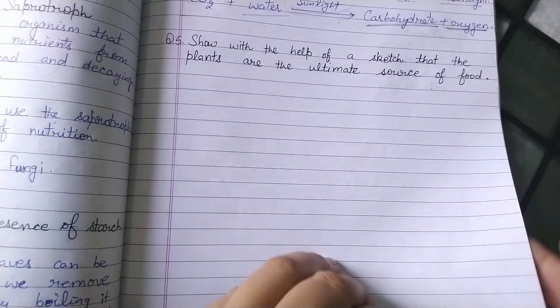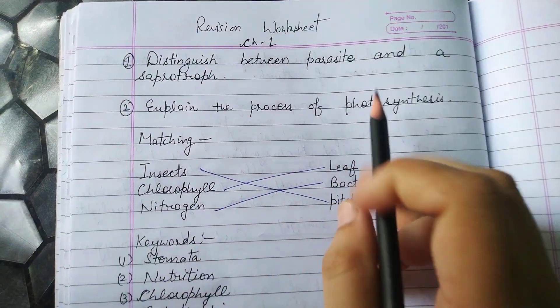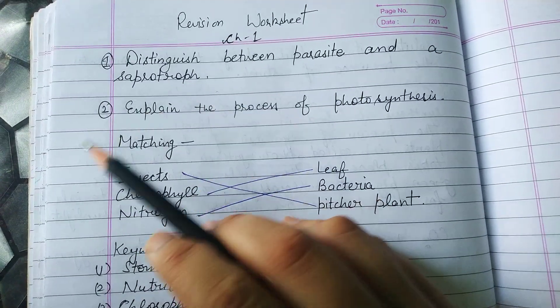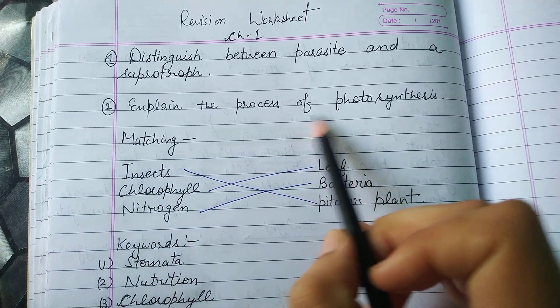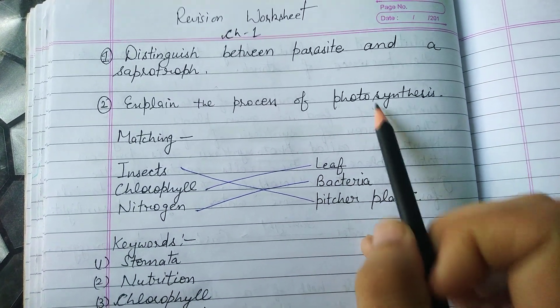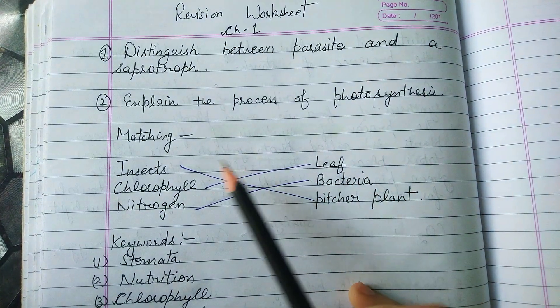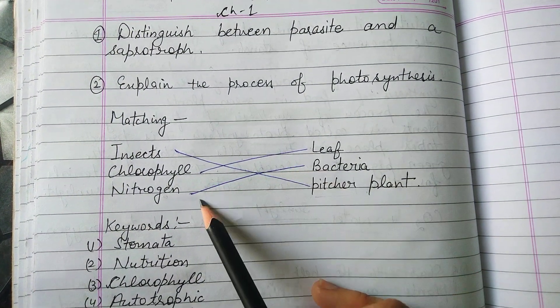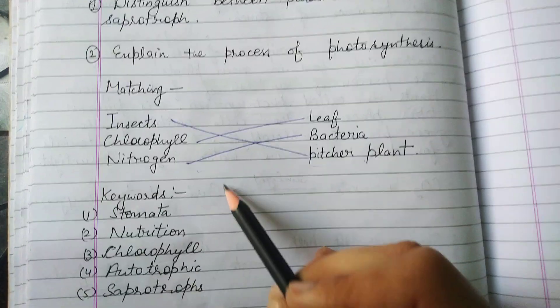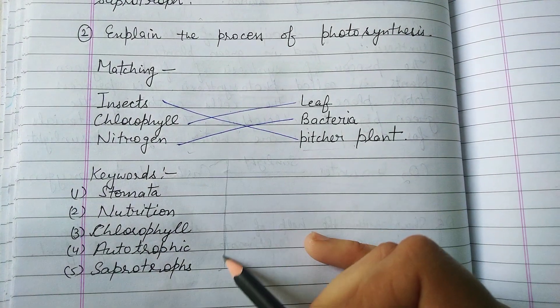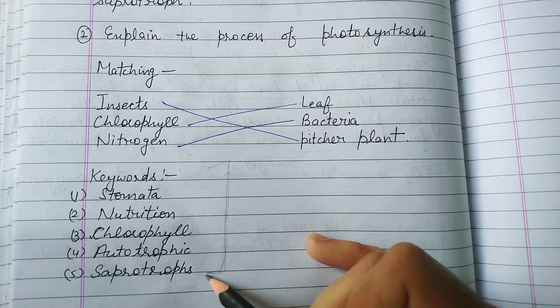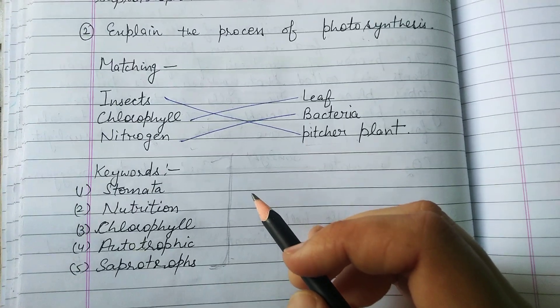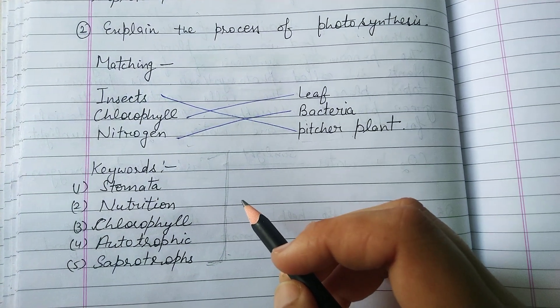Ye saare aapke question answers the — very short, short, and long question answers. Ye aapki division worksheet hai jismein parasite aur saprotroph mein difference, photosynthesis ka process, matching questions jaise insects-pitcher plant, chlorophyll-leaves, nitrogen-bacteria — ye saare keywords part one mein karva diye hain. So this is all about your Chapter 1, Nutrition in Plants. Thank you.